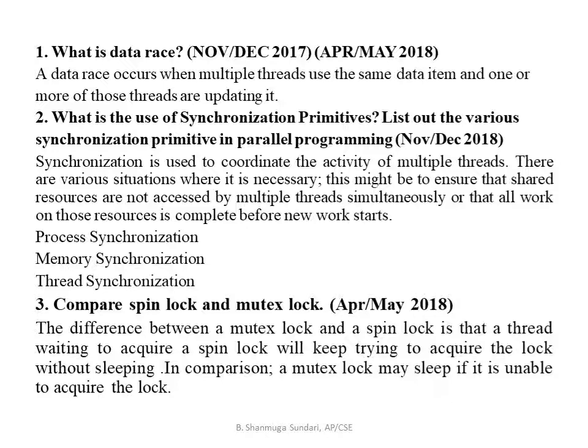What is the use of synchronization primitives? Synchronization coordinates the activity of multiple threads. There are various situations where it is necessary — it may ensure that shared resources are not accessed by multiple threads simultaneously, or that all work on those resources completes before new work starts. There are three types: process, memory, and thread.